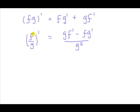For the quotient rule, it's got to be in the form of a function, say f divided by another function g. The quotient rule says what you do is: g times the derivative of f minus f times the derivative of g, all over g squared. In this case it does matter which way around you've got it — the g here is the same g, and g times the derivative of f is the first term.